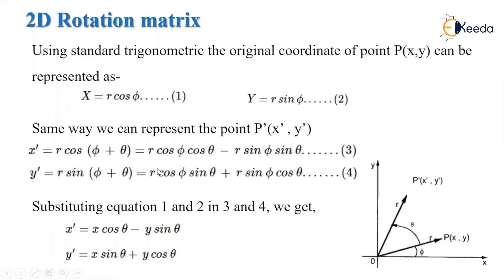Now let's see how the rotation matrix is derived using standard trigonometric formulas. The original coordinates of point P can be represented as: x = r cos(phi) and y = r sin(phi), using the trigonometric equations.